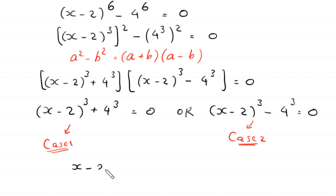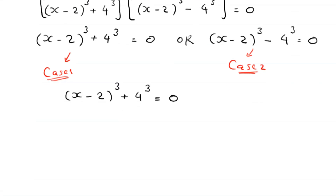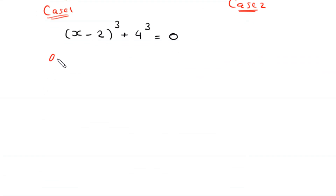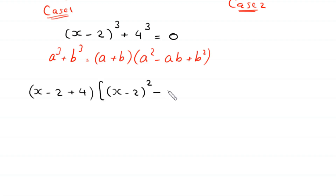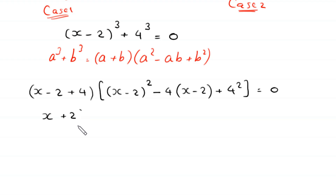Case 1: (x minus 2) cubed plus 4 cubed equals 0. By using the algebraic identity a cubed plus b cubed equals (a plus b)(a squared minus ab plus b squared), this expression becomes (x minus 2 plus 4) times [(x minus 2) squared minus 4(x minus 2) plus 4 squared] equals 0. So (x minus 2 plus 4) becomes (x plus 2).